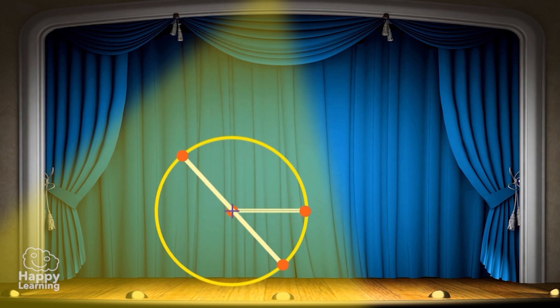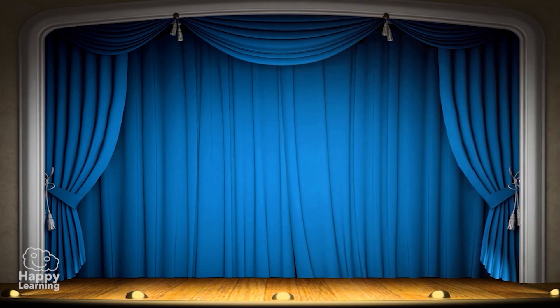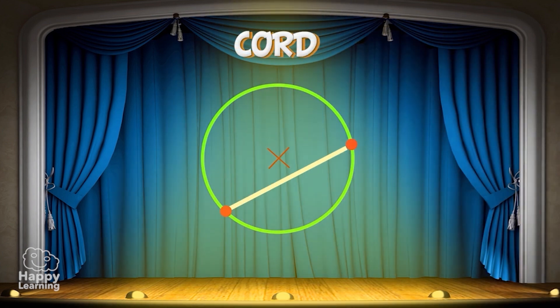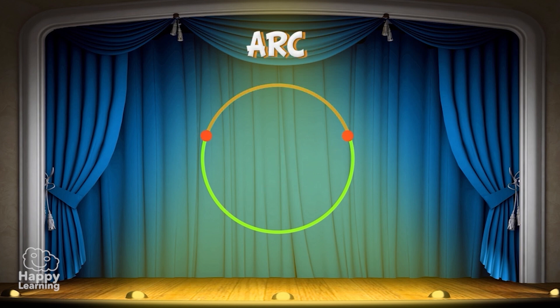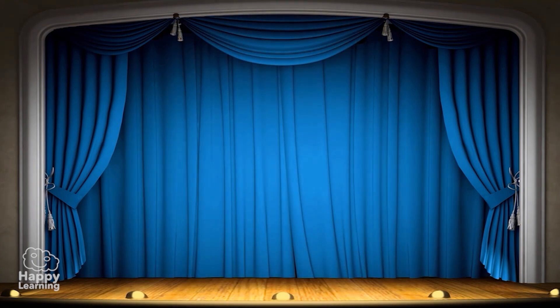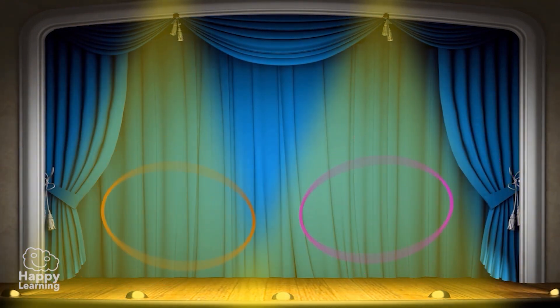But there are another three elements we should learn about. The cord is a line between two points on the circumference which does not go through the center. The arc is the part of the circumference which is in between two points. And the circular sector is the proportion of the circle which is inside the area which lies between two radiuses and the arc. It looks like a slice of cheese, doesn't it?